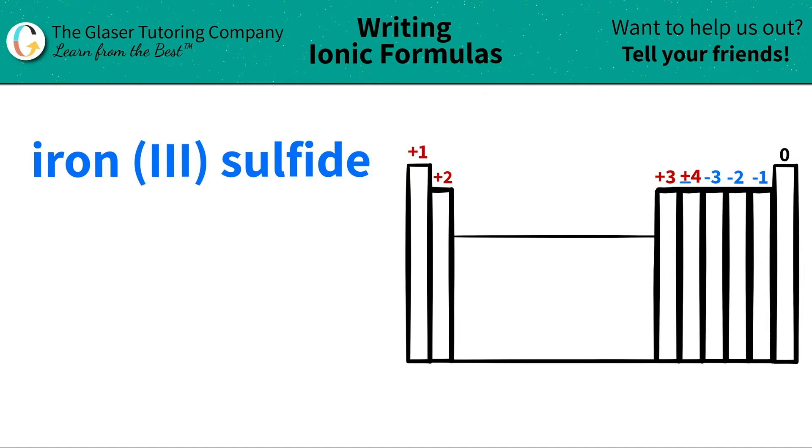Today we are going to be writing the formula for the ionic compound iron three sulfide. Let's see where these elements are located on the periodic table and then we'll take it from there.